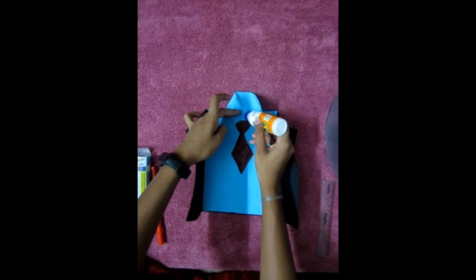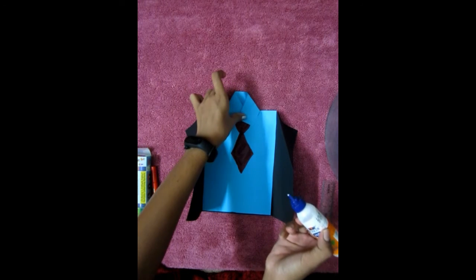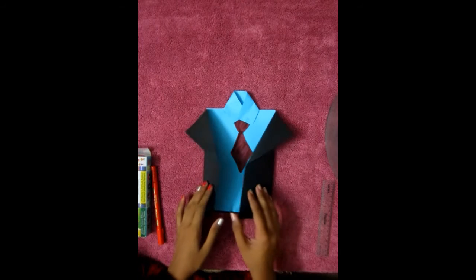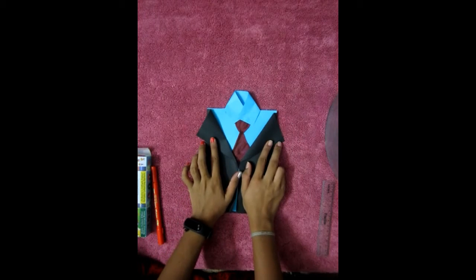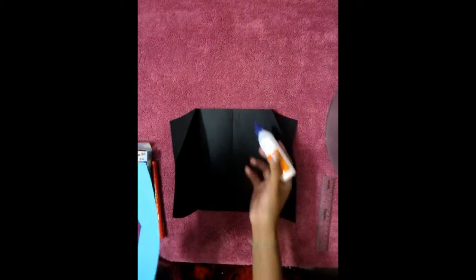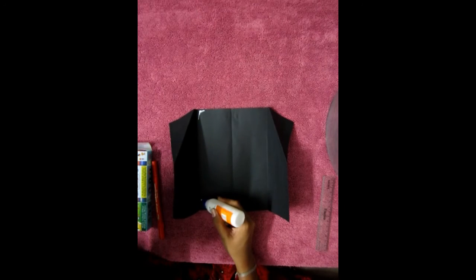Then paste one side and then the second side. So now it's looking like a blue shirt. Now you are able to figure out, so then take some glue and just paste the shirt on the back of it.